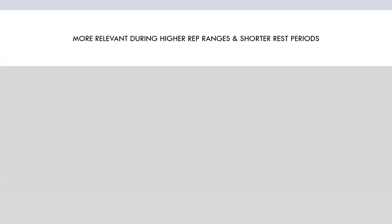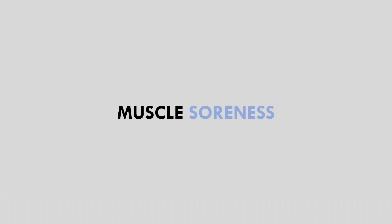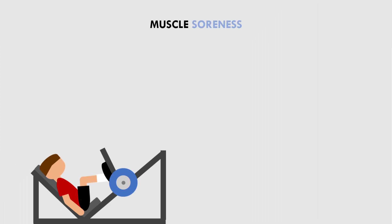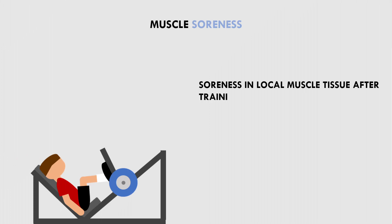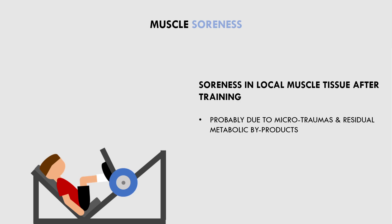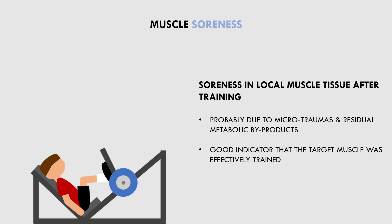The last general indicator we have is muscle soreness. This refers to the soreness experienced in local muscle tissue, usually the following day after exercise. We don't know exactly what causes this muscle soreness, although it is theorized that it is probably due to microtrauma of the muscle cells, residual metabolic byproducts in the muscle, or a combination of both. Muscle soreness is another good general indicator that our training was effective at targeting the specific muscle group.